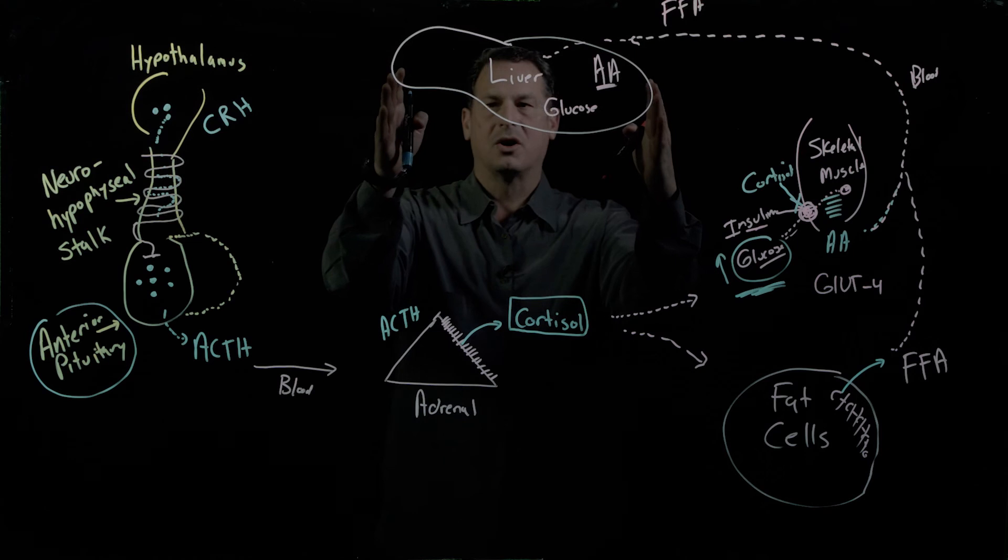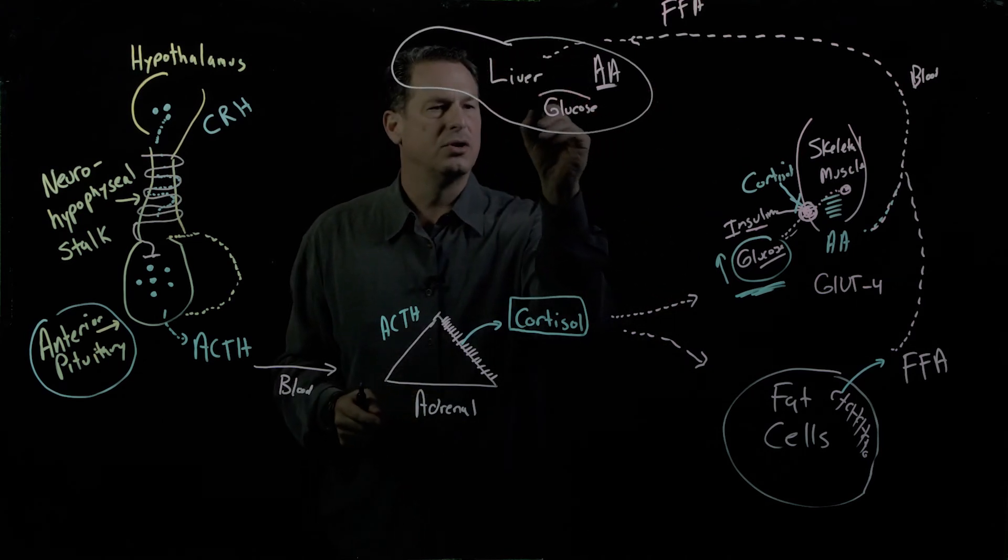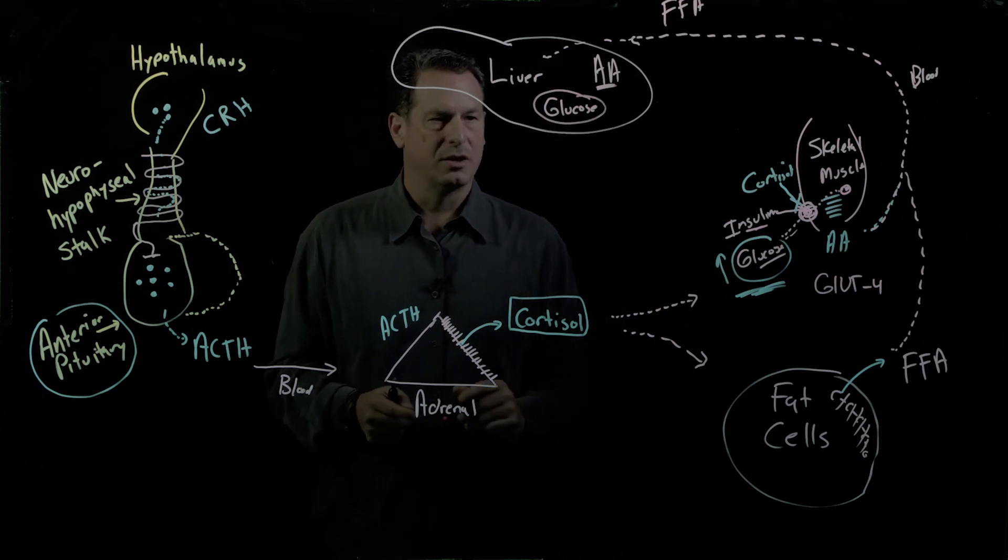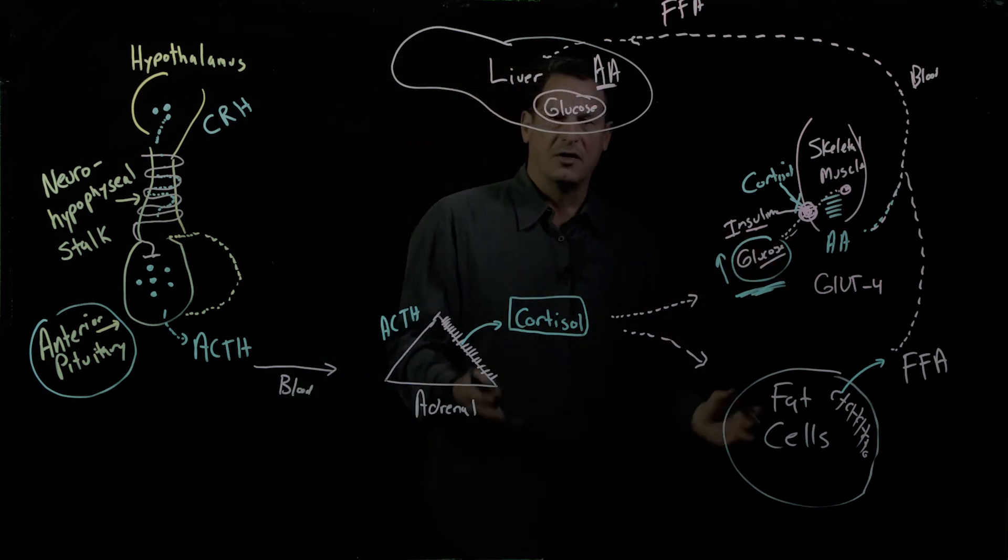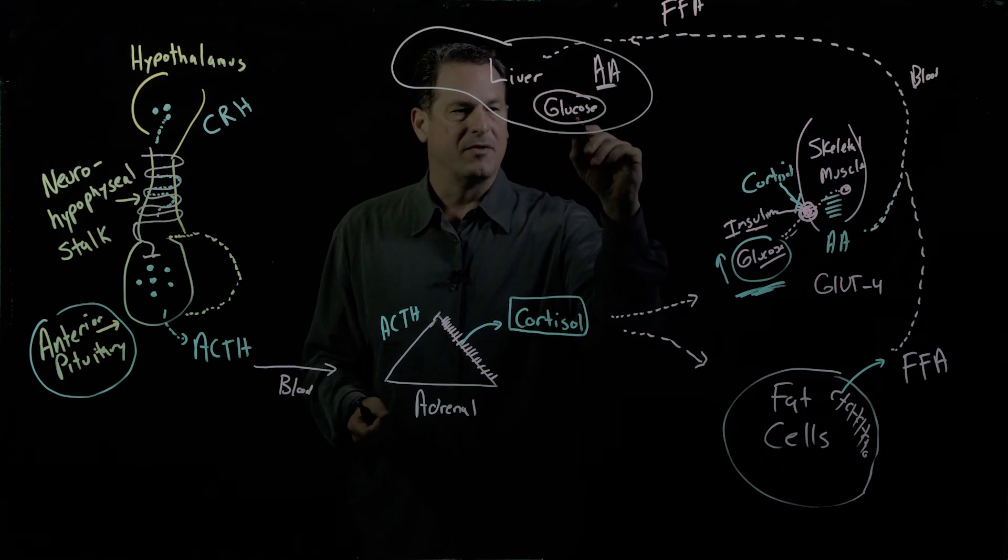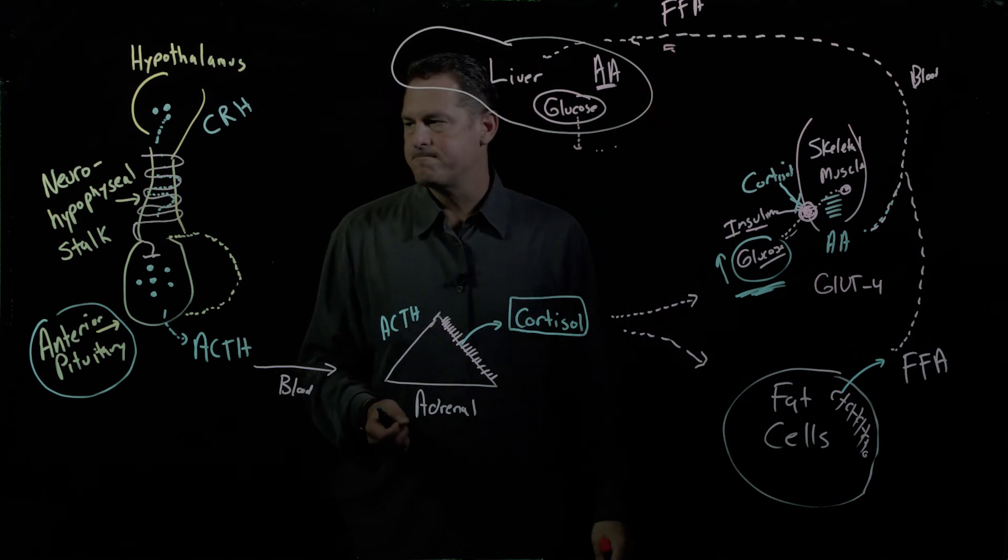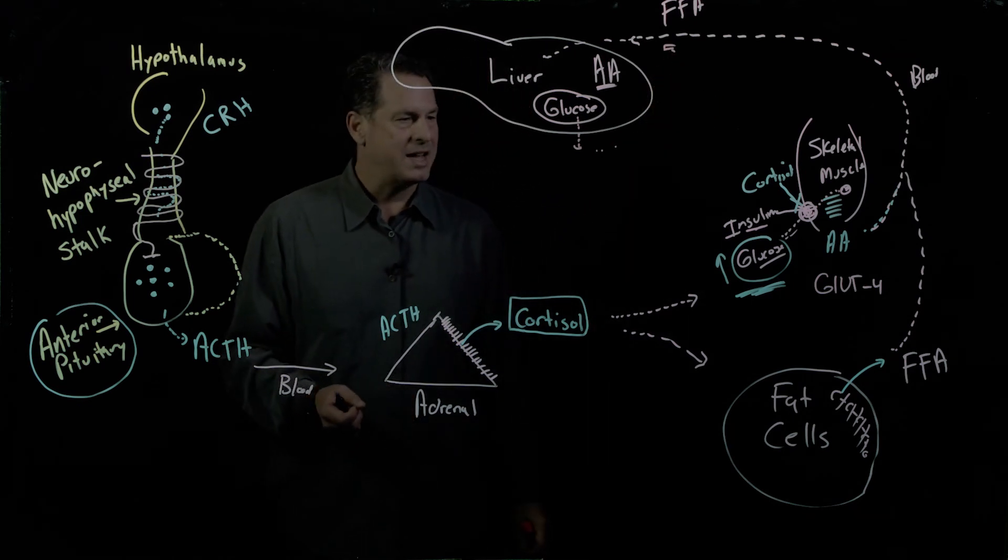and the cortisol at the level of the liver is causing new glucose formation from these other precursors, and some of that glucose will also be secreted out going to the blood. So what does that say? That says,